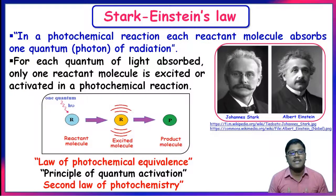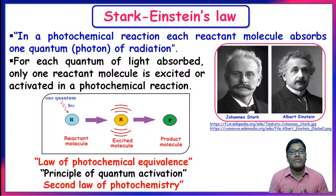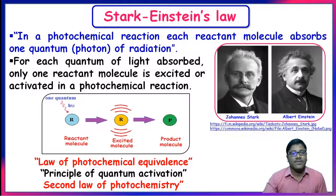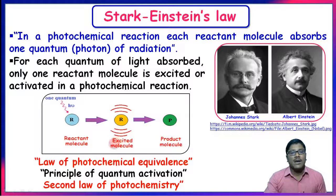Stark-Einstein's law: in a photochemical reaction, each reactant molecule absorbs one quantum of radiation or one photon. For each quantum of light absorbed, only one reactant molecule is activated. As shown, one reactant molecule absorbs one quantum of light, gets excited, and is then converted into a product molecule. Stark-Einstein's law is also known as the law of photochemical equivalence, the principle of quantum activation, or the second law of photochemistry.